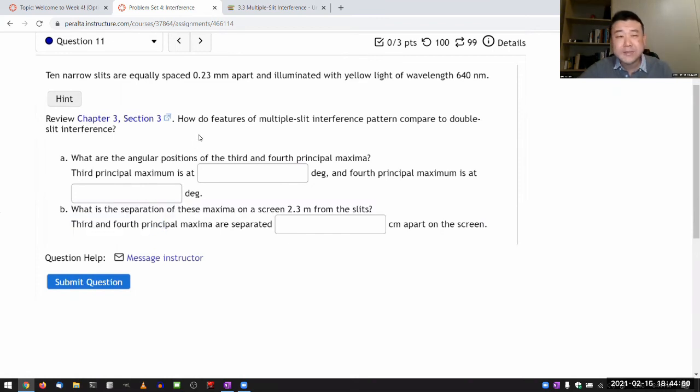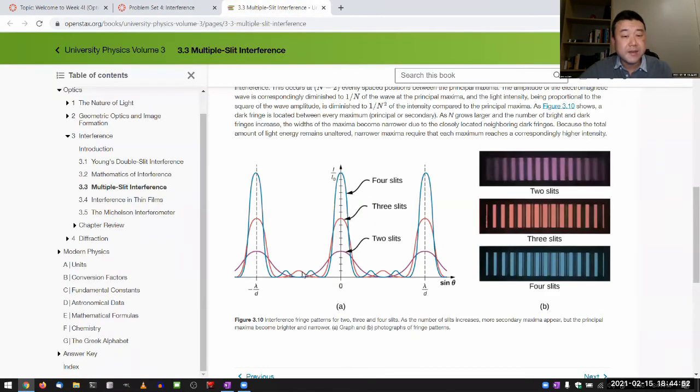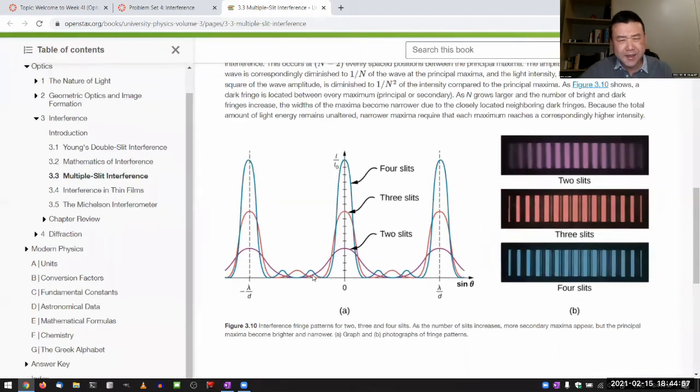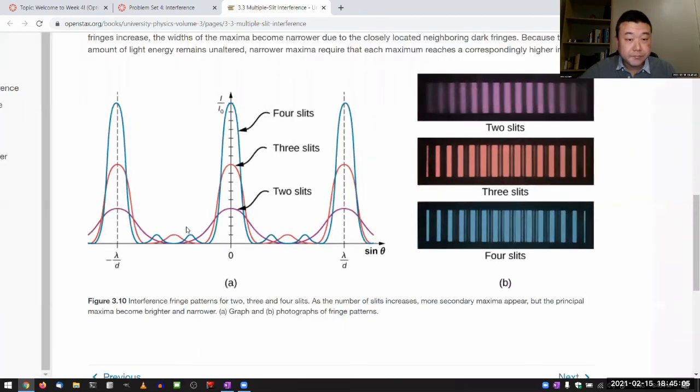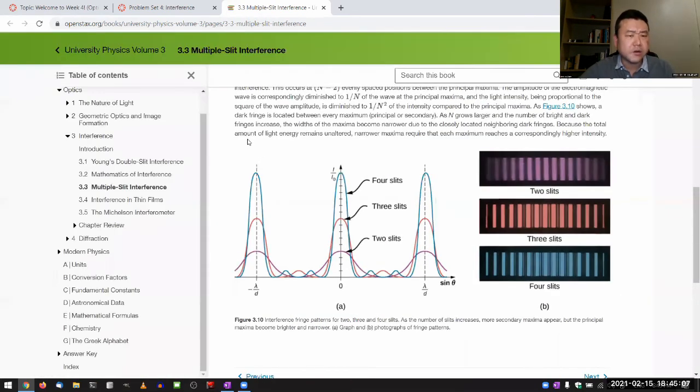If we were asking you something about these interference minima, then it would get more interesting. But I'm deliberately not asking you those questions because interesting also means difficult. I think I lecture more thoroughly on n-slit interference this way, because your textbook is ordered a little bit weird.